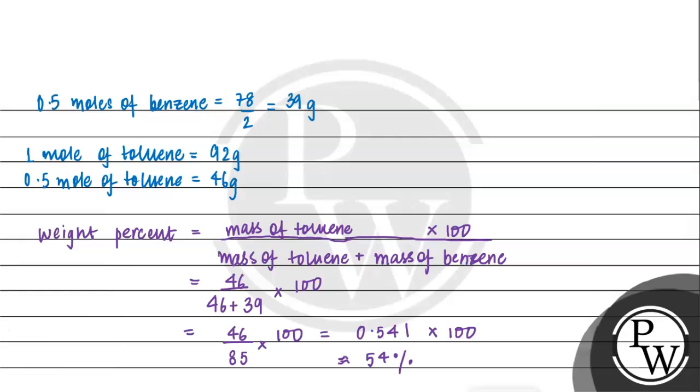So this is the final answer to the question. The weight percent of toluene is approximately 54 percent. I hope you understood the question well. Best of luck.